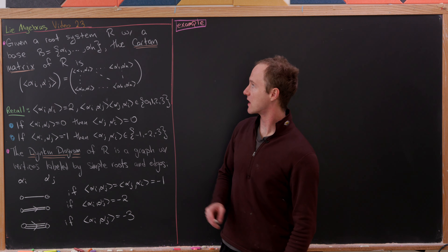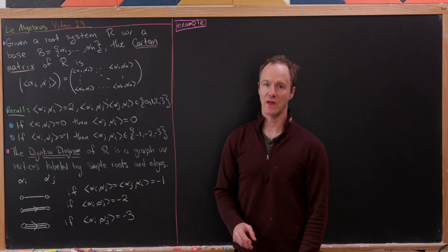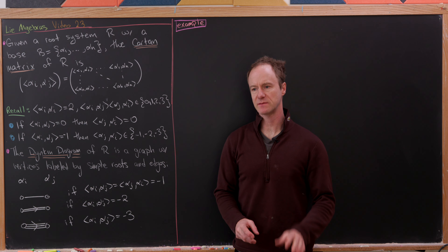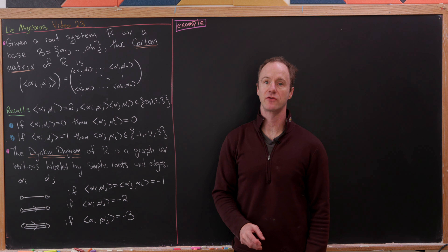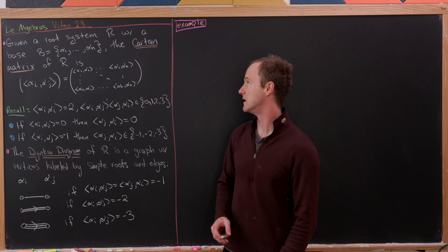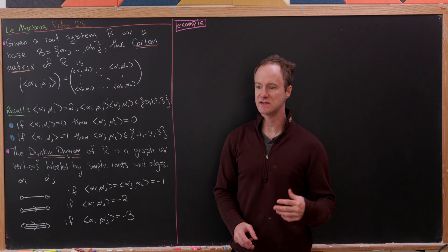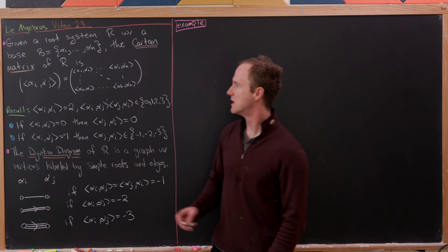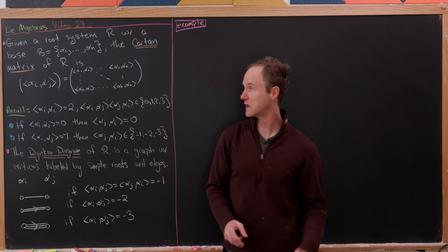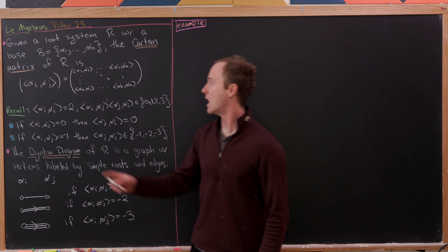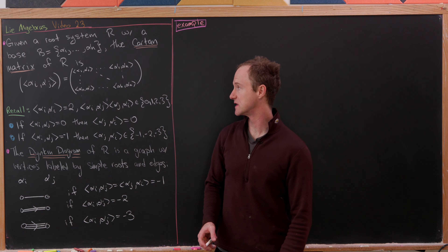So let's say we've got a root system R and we've got a base for that root system, sometimes called a set of simple roots, alpha 1 through alpha n. Then the Cartan matrix is simply this bilinear form — the killing form of alpha i, alpha j. Those are the entries.